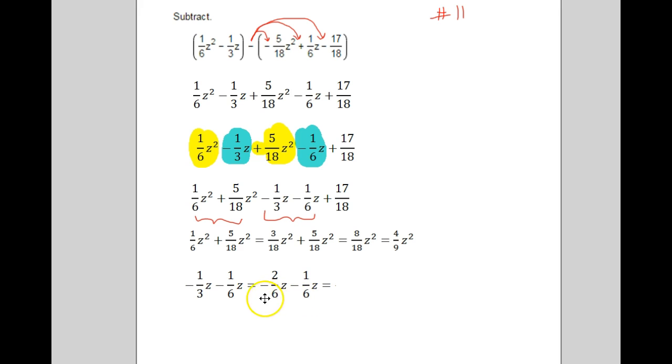Alright, and now they're both negative. So remember when they both have the same sign, we just add the two numbers. So 2 plus 1 is 3, and then we just keep that same sign of negative. So 3/6 z, and then that will reduce to a half. So this first two is a 4/9 z squared, this next two is a negative 1/2 z, and then the constant, there's nothing we can do with that. So we end up with 4/9 z squared minus 1/2 z plus 17/18 is what these two things combine to.